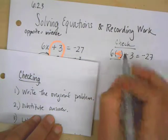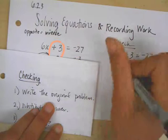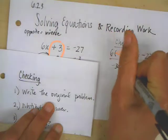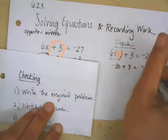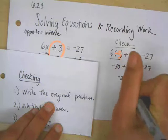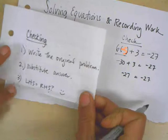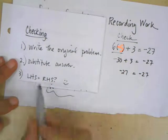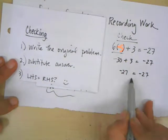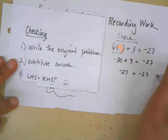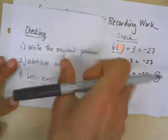I like to just underline that so I can see I have a multiplication here first. So 6 times negative 5 is negative 30 plus 3 equals negative 27. Negative 27 equals negative 27. So I'm looking to see, does my left-hand side equal the right-hand side? Yes, it does.